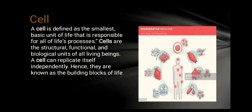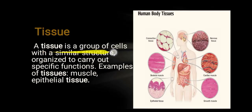Tissue is a group of cells with a similar structure organized to carry out a specific function. Examples of tissues include muscle tissue and epithelial tissue. In our body, there are different types of tissue which have different structures, different functions, and different types of cells.